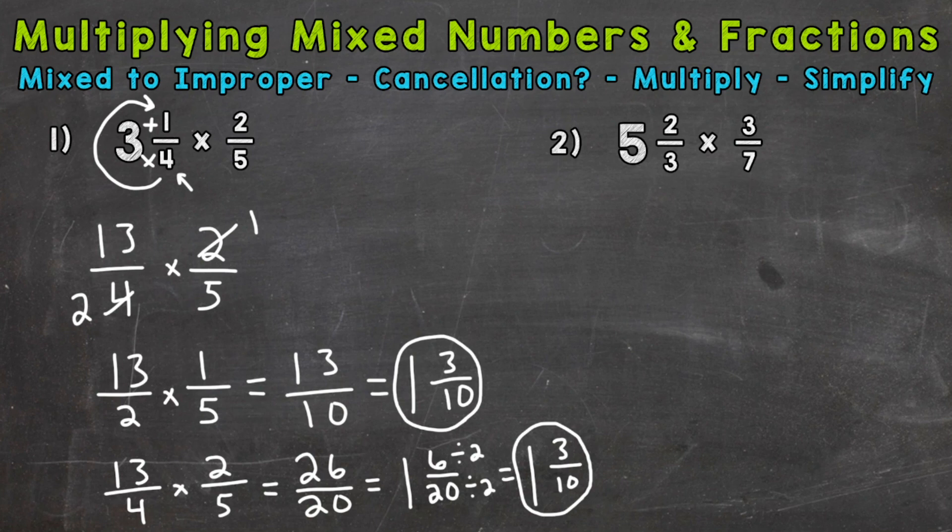So on to number two, where we have five and two thirds times three sevenths. So again, first thing we need to do change any mixed numbers to improper fractions. So we'll start at the bottom, work our way up, multiply and add. So three times five is 15 plus two is 17. Keep the denominator of three the same. Times three sevenths.